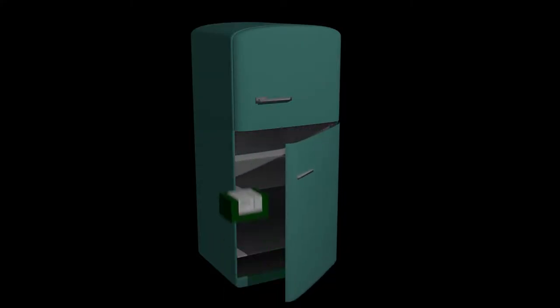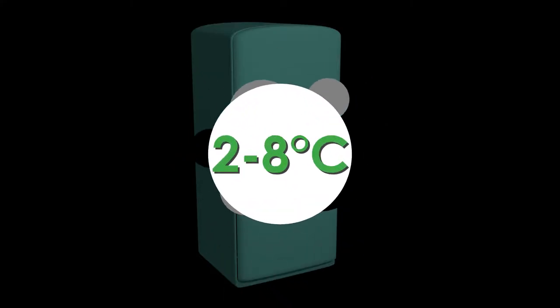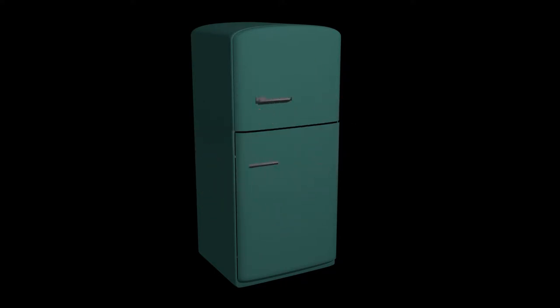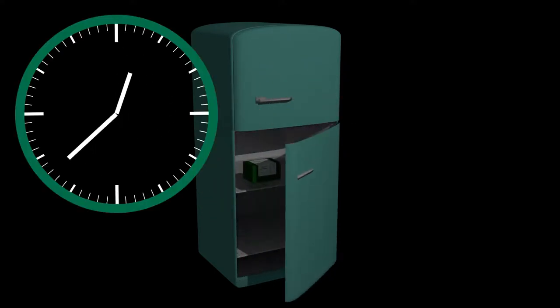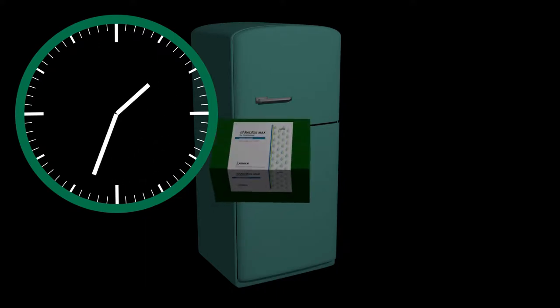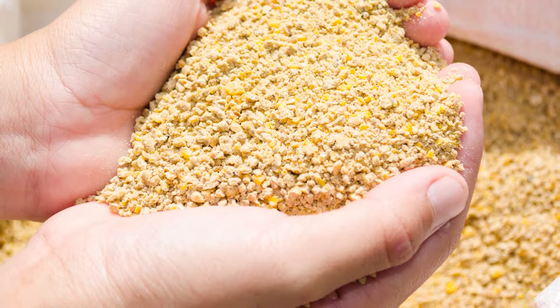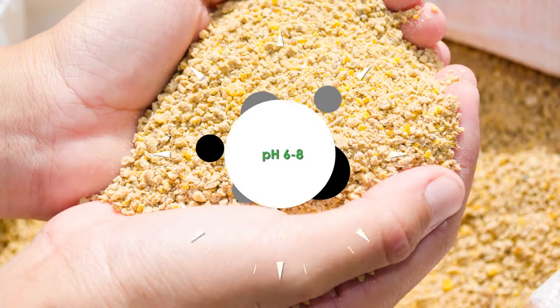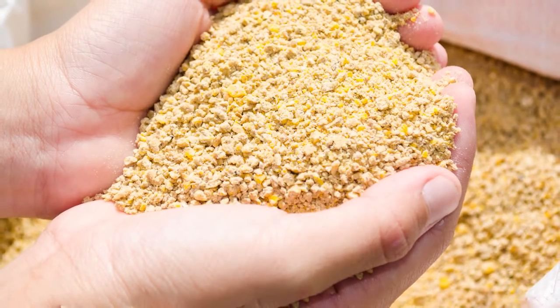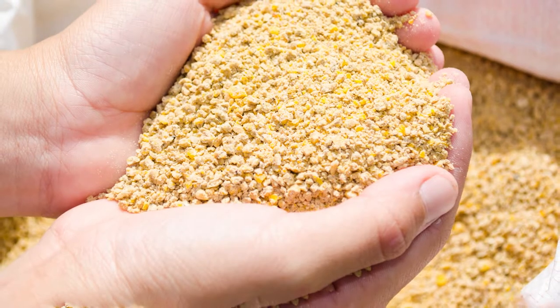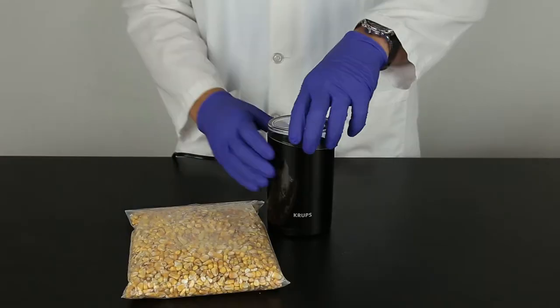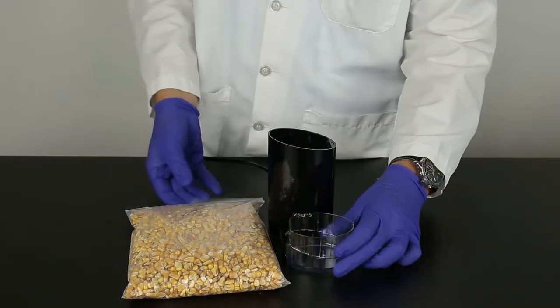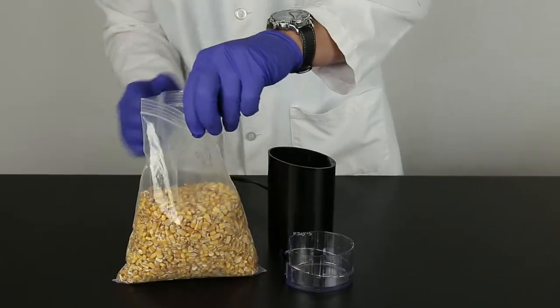The test kit should be stored in a refrigerator set at 2 to 8 degrees Celsius. Do not freeze the kit. Prior to use, warm the kit to room temperature, which typically takes about 2 hours. Commodities tested should have a pH of 6 to 8. Excessively acidic or alkaline samples should be adjusted. For instructions on adjusting the pH, please contact your Neogen representative.